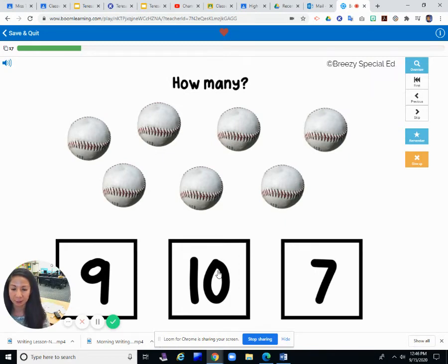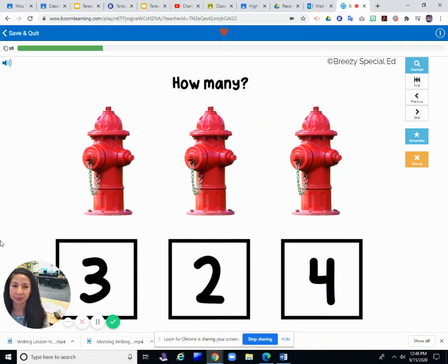Baseballs. How many baseballs? Let's count them. There's one, two, three, four, five, six, seven. How many? Nine, ten, or seven? You think nine? Not nine. Ten? Not ten. Seven? Okay, we're correct.